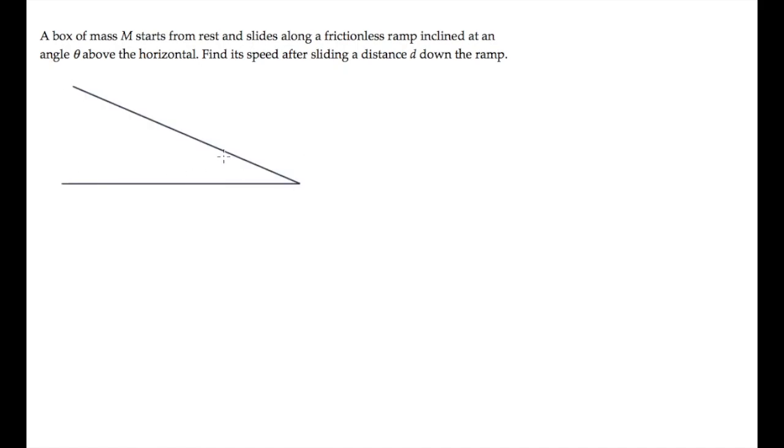The ramp in this problem is frictionless, inclined at an angle theta above the horizontal. A box of mass m starts from rest and slides a distance d along the ramp. We're asked to find the final speed, v sub f.